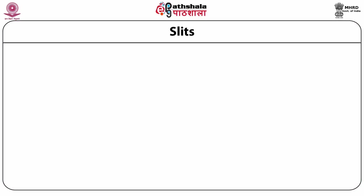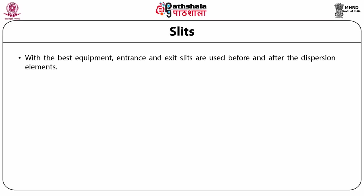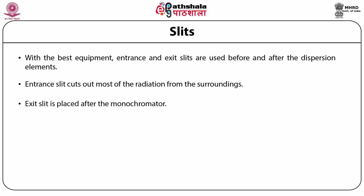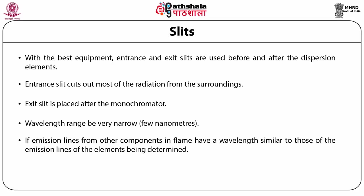The slits are another important component. Entrance and exit slits are used before and after the dispersion elements. The entrance slit cuts out most radiation from the surroundings, allowing only radiation from the flame and mirror to enter the optical system. The exit slit, placed after the monochromator, allows only a selected wavelength range to pass to the detector. For many purposes, this wavelength range must be very narrow — on the order of a few nanometers — to prevent interfering spectral lines from reaching the detector.